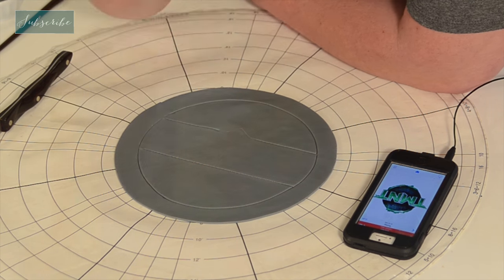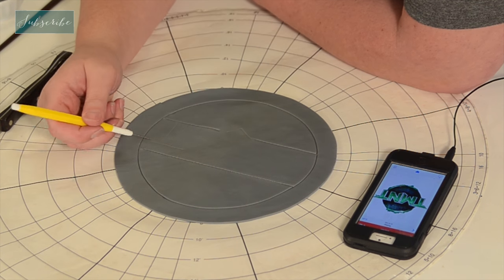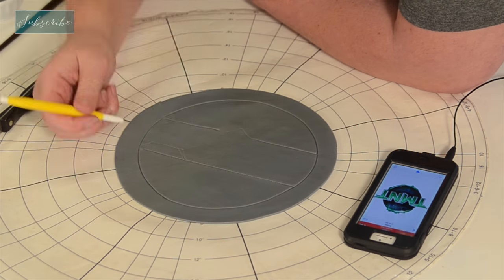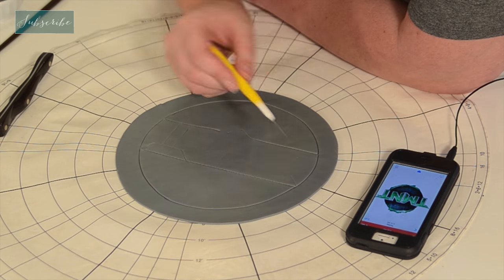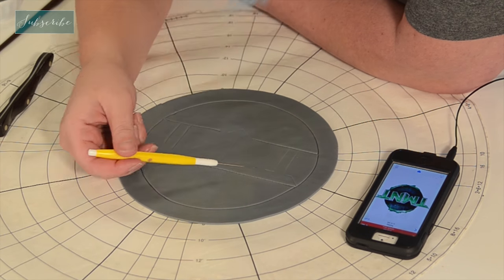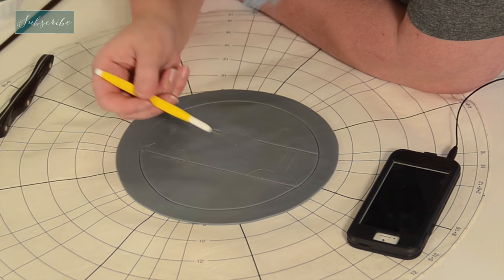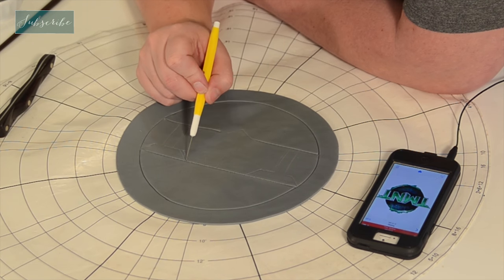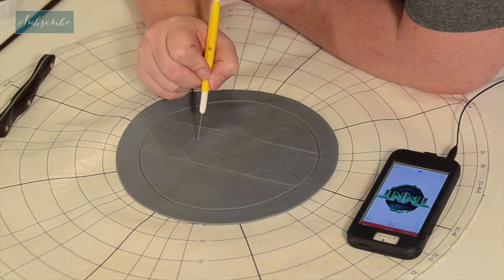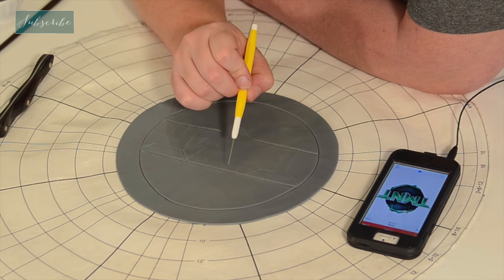So you can see I'm using my scriber needle to actually sketch everything before I cut it out. It's that same old adage, measure twice, cut once. And so I'm making sure that I'm happy with the placement, that it's centered, and that I've captured all of the details before I pick up that knife and cut right through it.